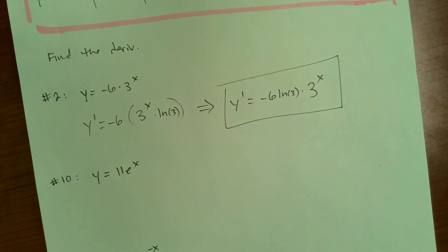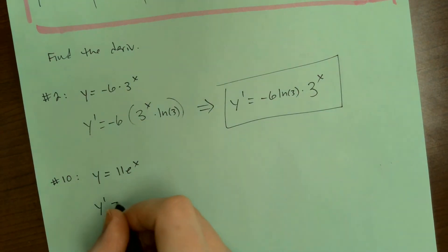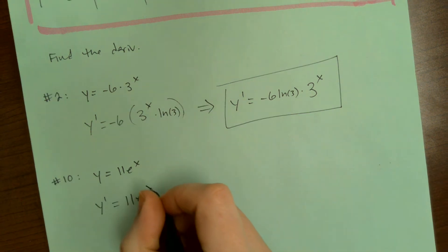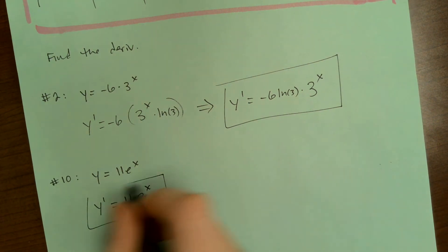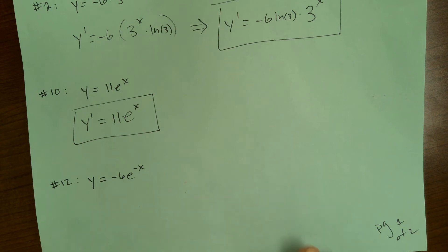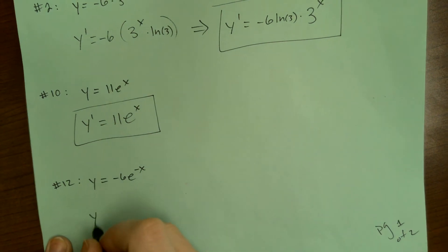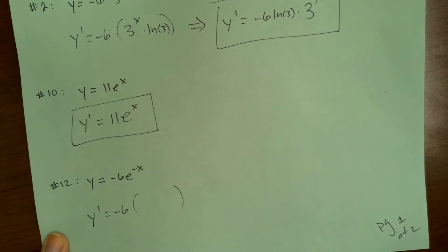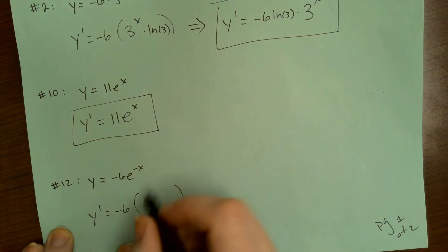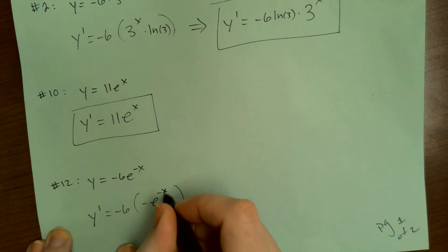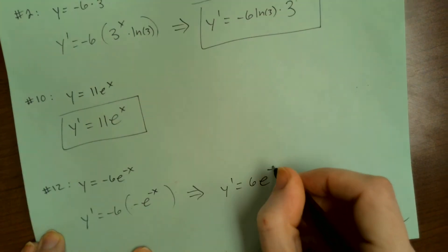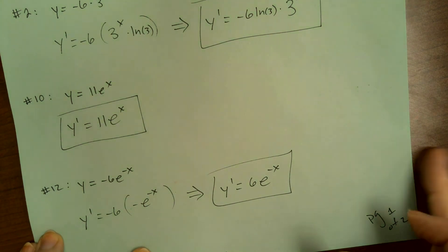For the next one, if y is 11e to the x, then 11 is a coefficient and the derivative of e to the x is the same, e to the x — that only happens with e to the x. For the following one with negative 6e to the negative x, I bring down the negative 6, and the derivative of e to the negative x is negative e to the negative x, so y prime is 6e to the negative x.